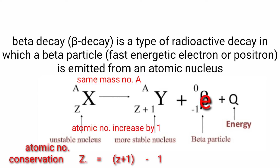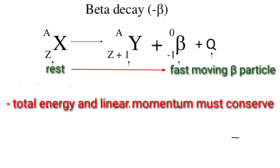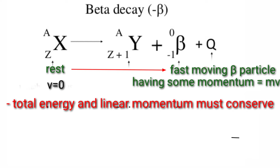In beta decay, some energy is also released. In this reaction, mass conservation is followed, but total energy and linear momentum must also be conserved. The X nucleus is at rest. When the beta particle — a fast-moving electron — is emitted, it moves at some velocity. To conserve energy and momentum, we add a particle in the reaction known as the anti-neutrino, which is the anti-particle of the neutrino. Anti-neutrinos and neutrinos are massless and chargeless particles.